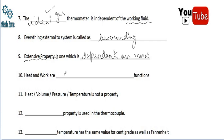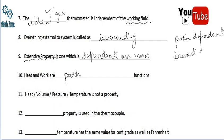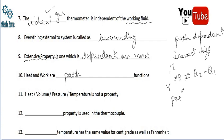Heat and work are — blank. Heat and work are both path functions; they are path dependent and are inexact differentials. Inexact differential simply means the integral from 1 to 2 of dQ would not equal Q₂ − Q₁. They also depend upon the path history.